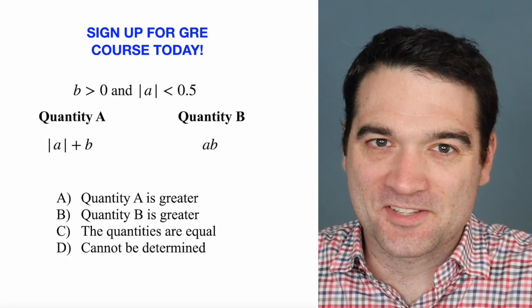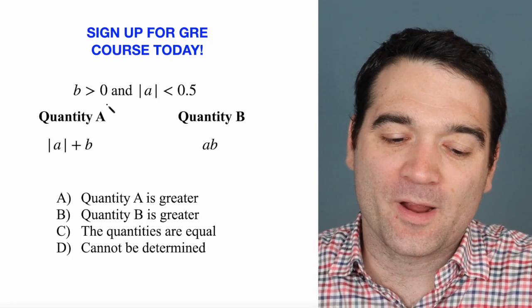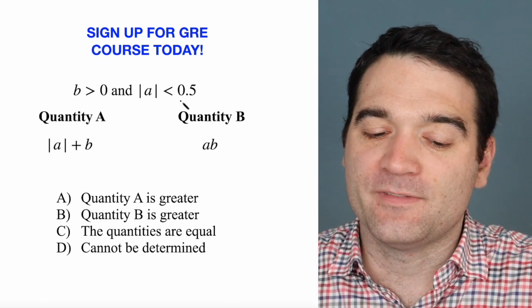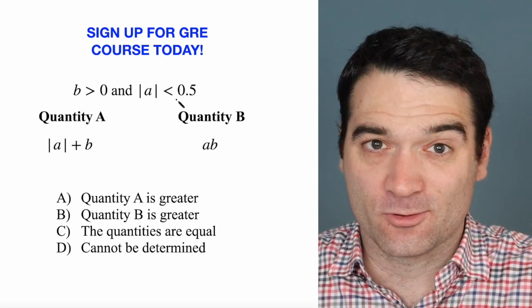Here's a GRE algebra question. Let's take a look. B is greater than 0, and the absolute value of A is less than 0.5.